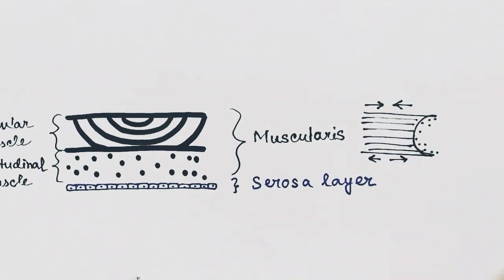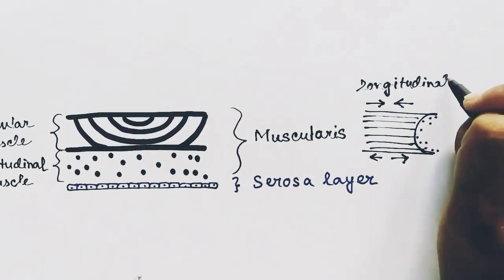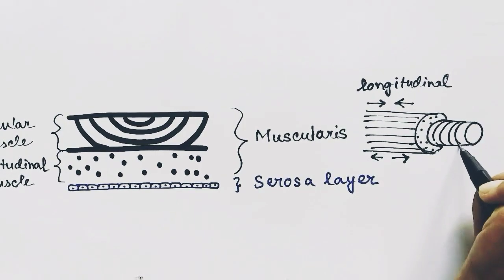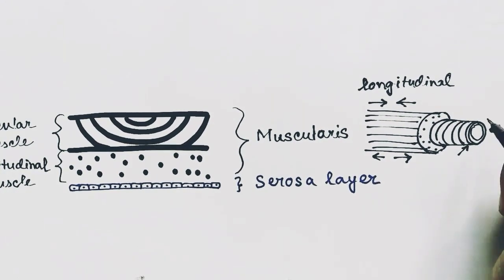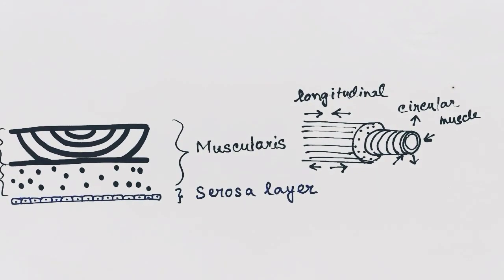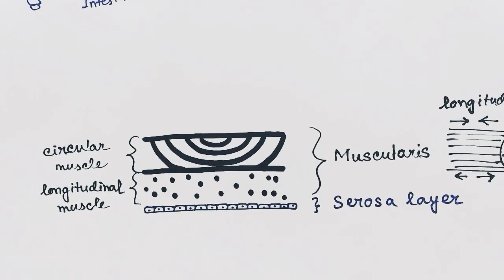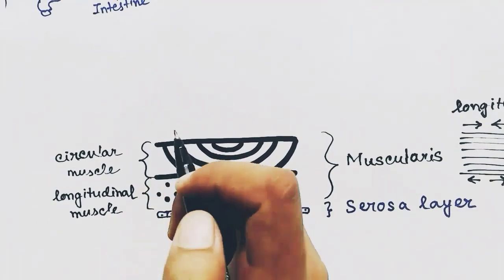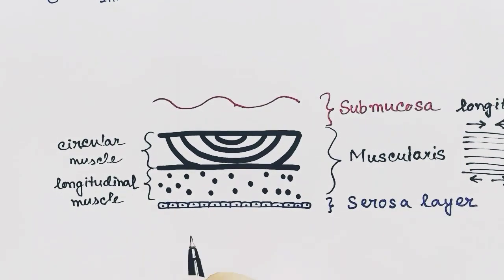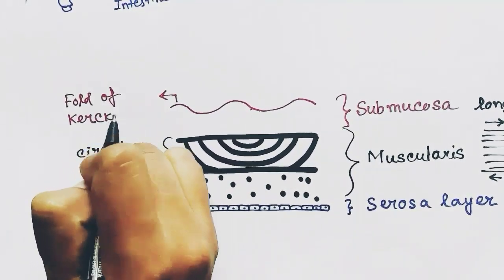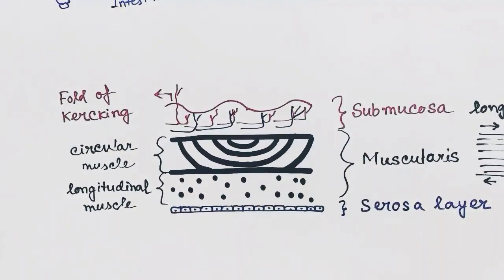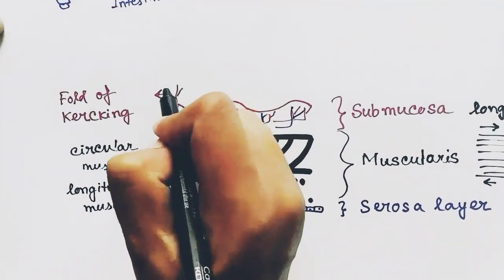The longitudinal muscles are responsible for the increase or decrease of the length of the intestinal pipe. The circular muscles are responsible for the increase or decrease of the diameter of the intestinal pipe — they surround the pipe of the intestinal tube. After the muscularis layer comes the submucosa layer, which has some folds called the folds of Kerckring.